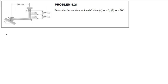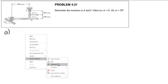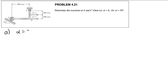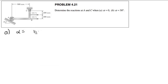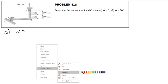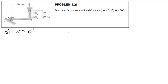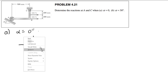So the first case, let's do the first case. Alpha is 0 degrees. Let me draw a free body diagram here. What this problem is trying to illustrate is that the reaction on a roller support will always be perpendicular to the surface. That's what this problem is trying to illustrate.